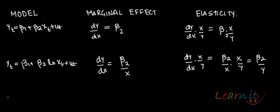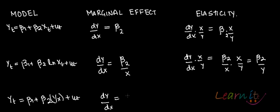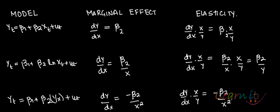Suppose you have the model yt = β1 + β2*(1/x) + ut, and you want to find out dy/dx — it is −β2/x². How do you find out elasticity? Elasticity is (dy/dx) * (x/y), which is (−β2/x²) * (x/y), giving −β2/(xy).